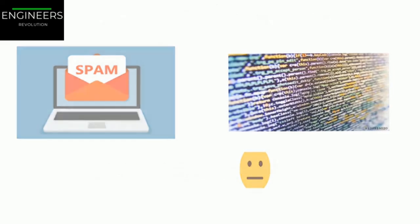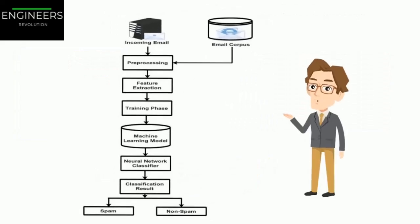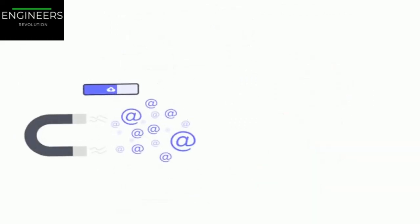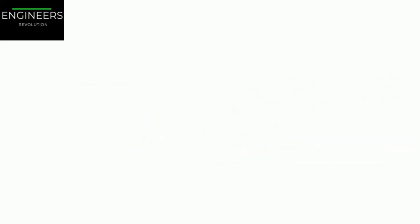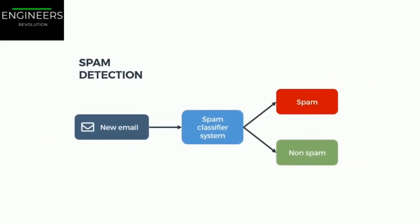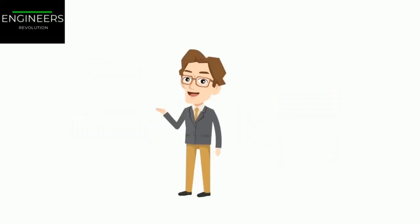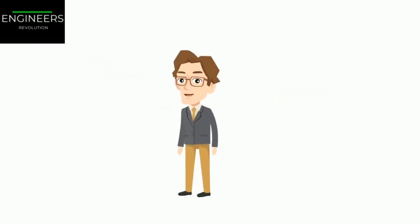In contrast, a spam filter based on machine learning techniques automatically notices the words being blocked and also starts flagging the other words without your intervention. Another area where machine learning shines is for problems that either are too complex for traditional approaches or have no known algorithm.